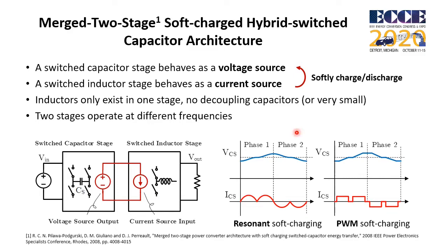Another approach for soft charging in a two-stage switch capacitor converter is a merged two-stage soft-charging architecture. In a merged two-stage architecture, there is a switch capacitor stage that behaves as a voltage source, and a switched inductor stage that behaves as a current source. The voltage source stage is softly charged and discharged by the current source stage. Usually only the current source stage has inductors, and there are no decoupling capacitors between the two stages, so the power density can be higher.